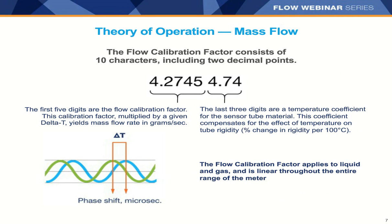The flow calibration factor is one of the most important pieces of a Coriolis meter — it's the thumbprint that characterizes the whole meter. It's ten characters including two decimal points: the first five digits are the flow calibration factor, which multiplied by a given Delta T yields the mass flow rate in grams per second. The last three digits are the temperature coefficient for the sensor tube material, compensating for the effect of temperature on tube rigidity — percent change in rigidity per 100 degrees Celsius change. This is very linear: a 10% change in the factor results in a 10% change in flow.